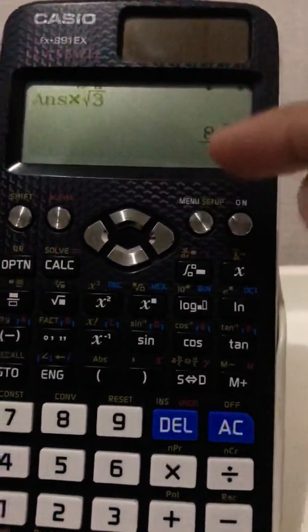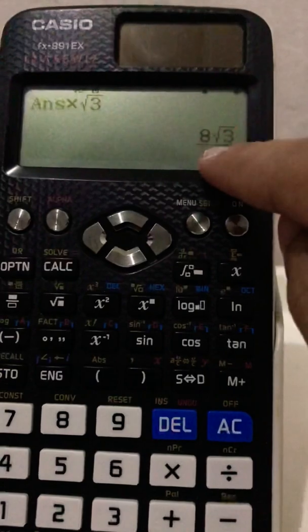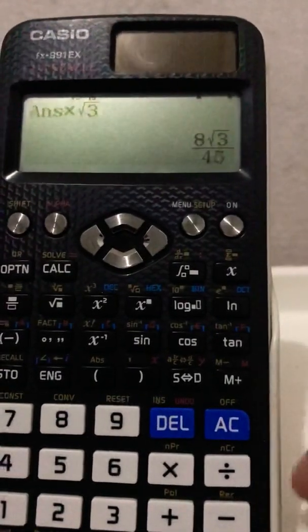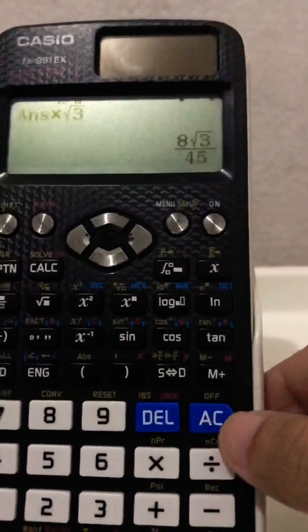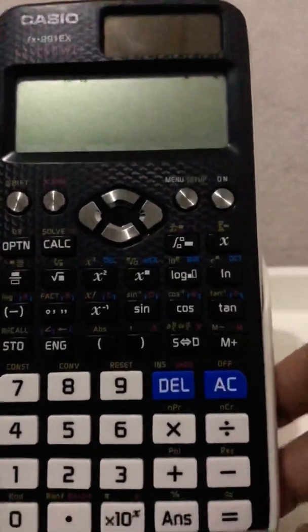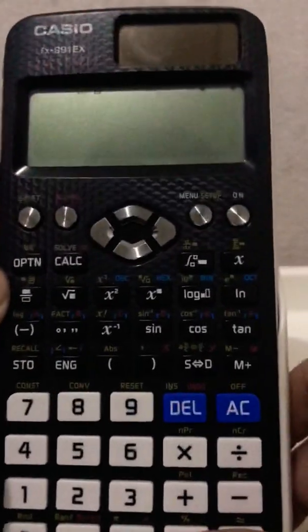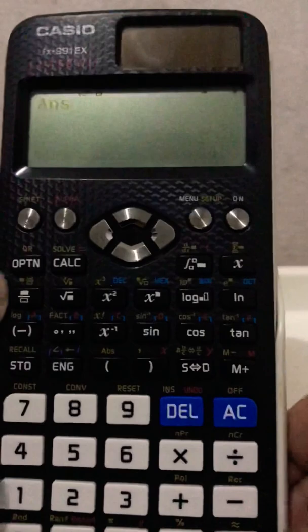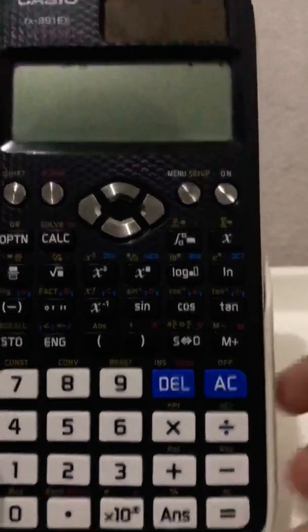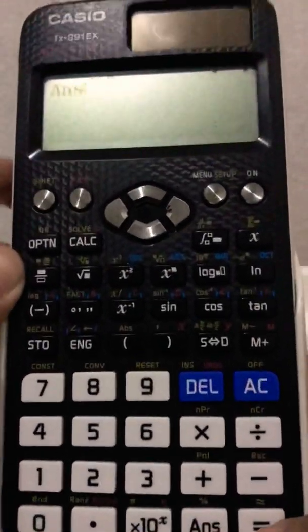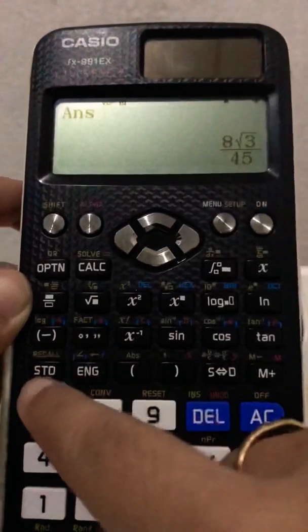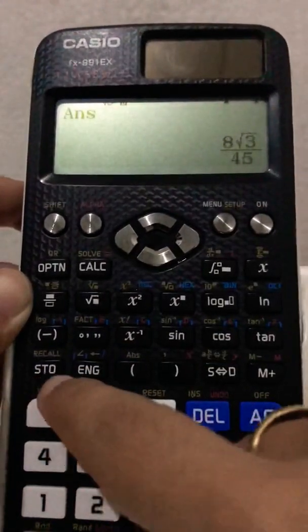So how to save this: first thing, you have that answer square root of 3 all over 45. Press AC, no need to worry because it's still there. You can check it by pressing ANS key, ANS equals, see it's still there. So first step: AC, ANS equals, locate store key or STO in your calculator.